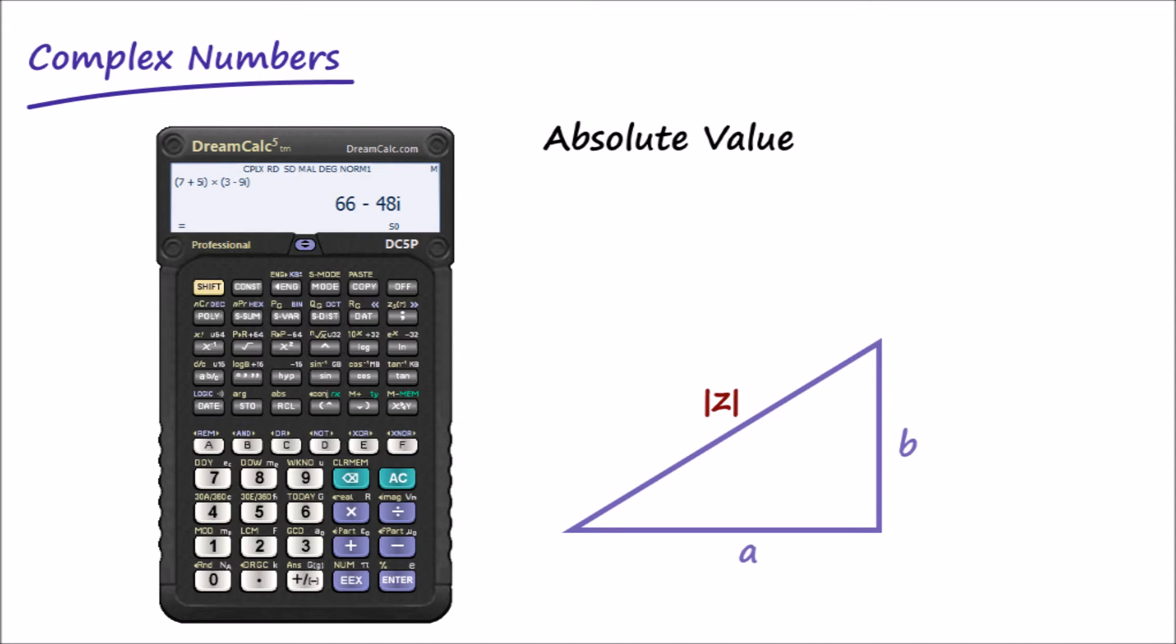Let's now look at the absolute value of a complex number, which is defined as its distance from the origin when plotted on a complex plane. The Pythagorean theorem tells us that it equals the square root of the sum a squared plus b squared.